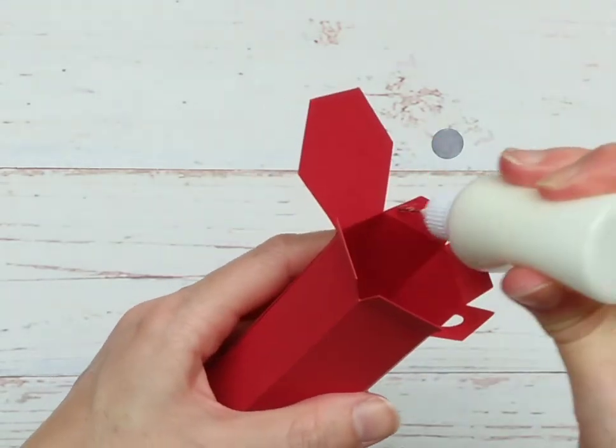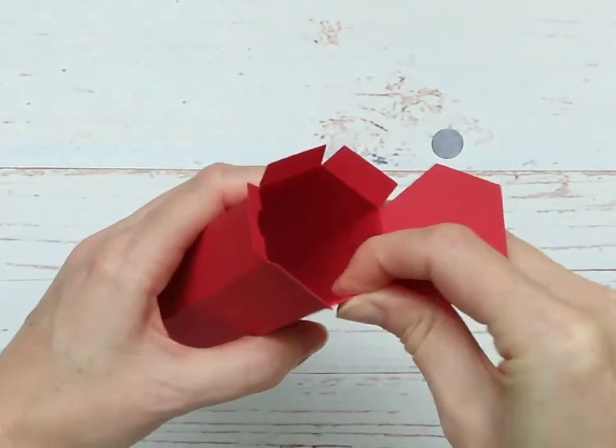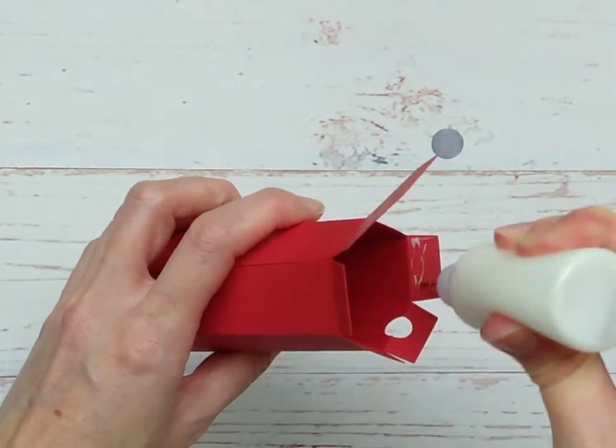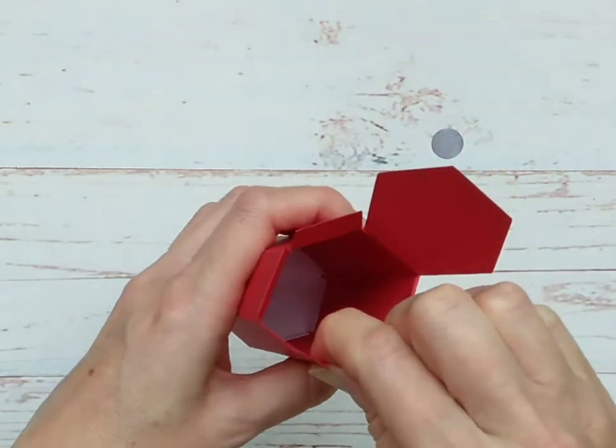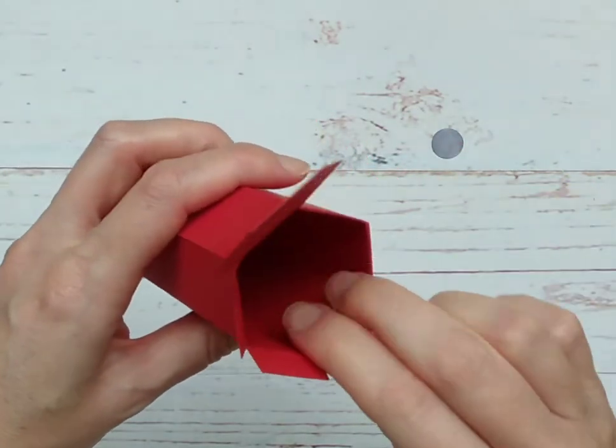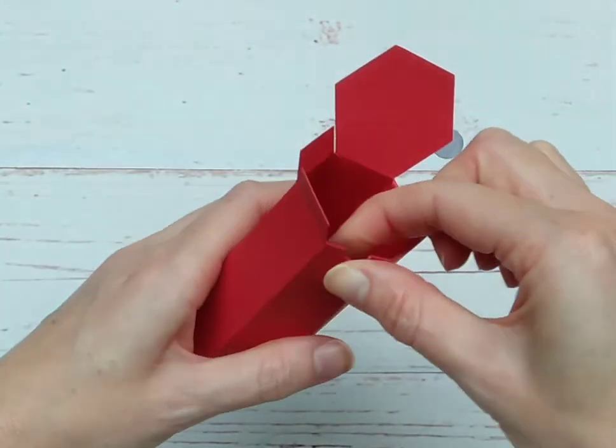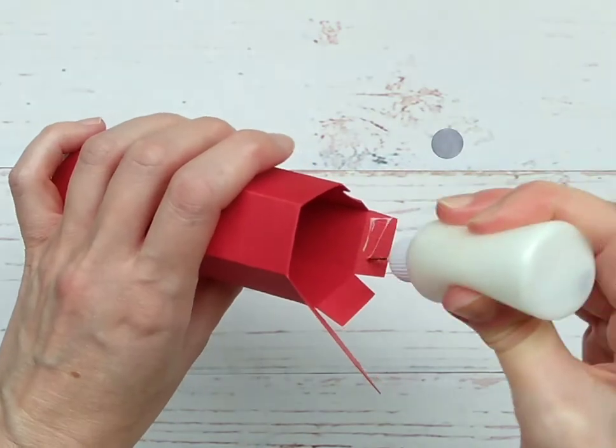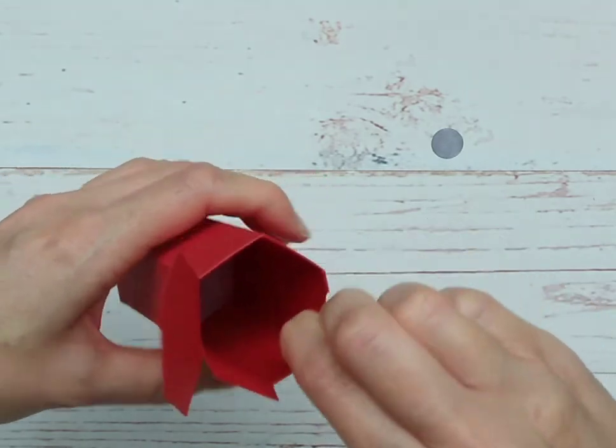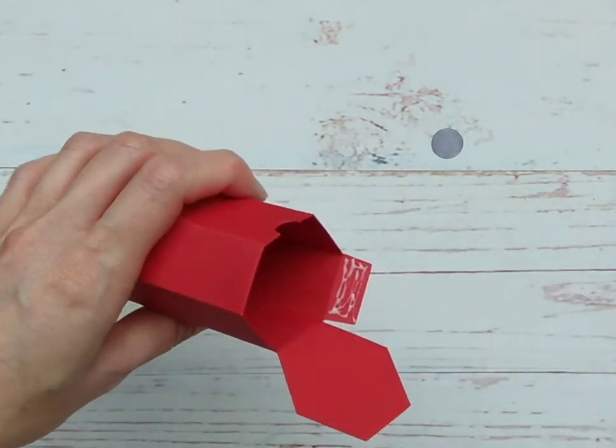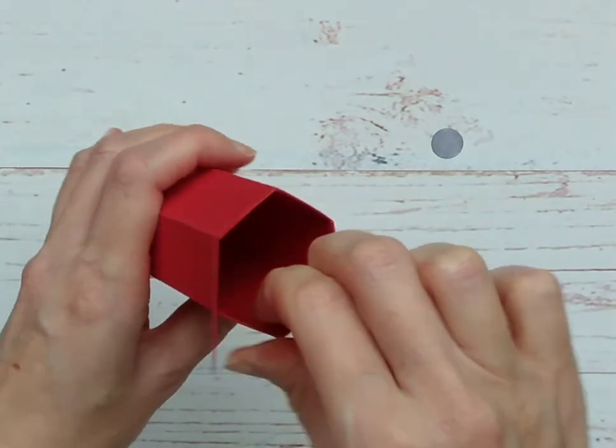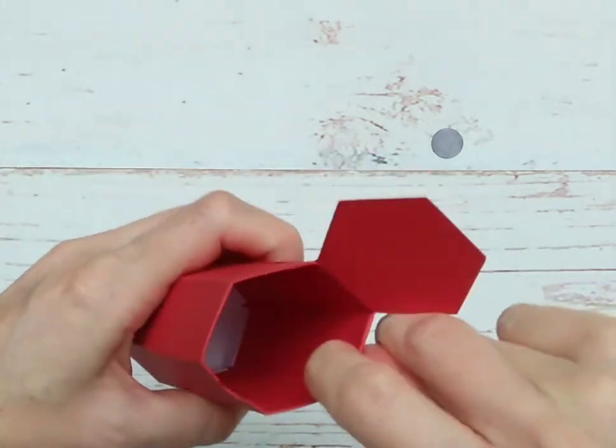So over the other end of the pencil, you need to put glue on each of those five tabs and fold them down inside the pencil. And this is going to strengthen the end of the pencil, and it will help to keep the lid closed. So just work your way around each of those five tabs. Make sure each one is pressed down nice and firmly.